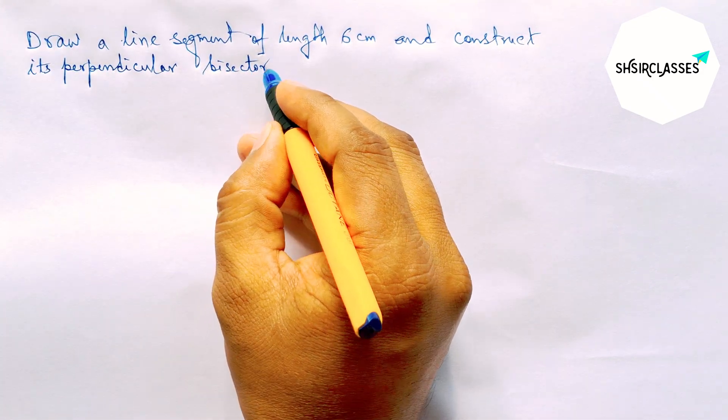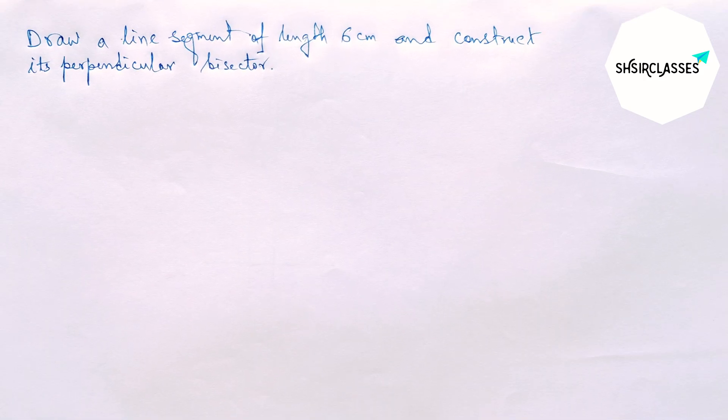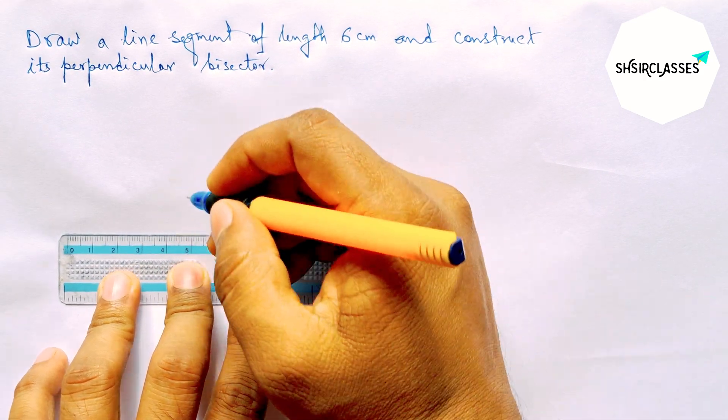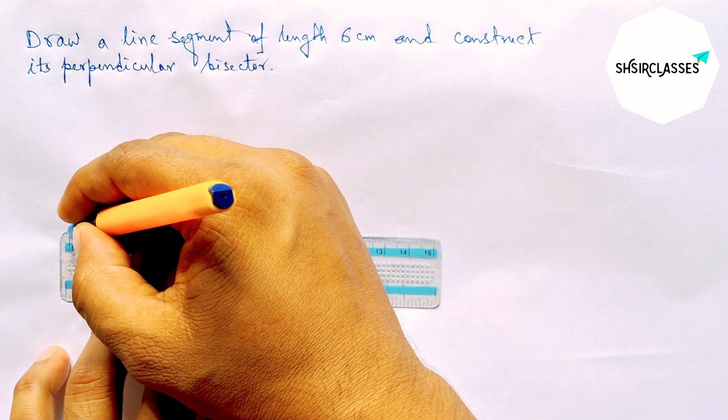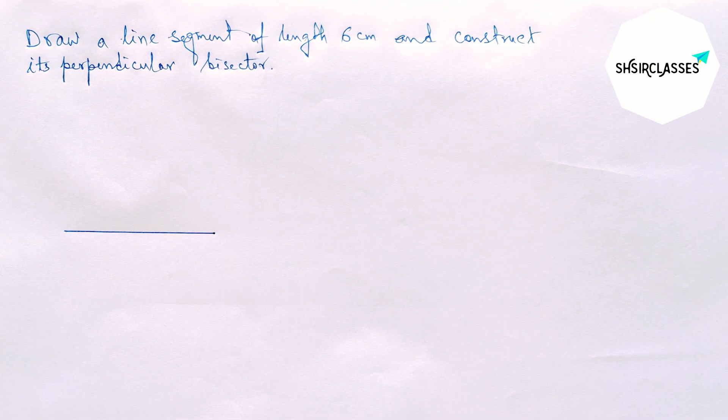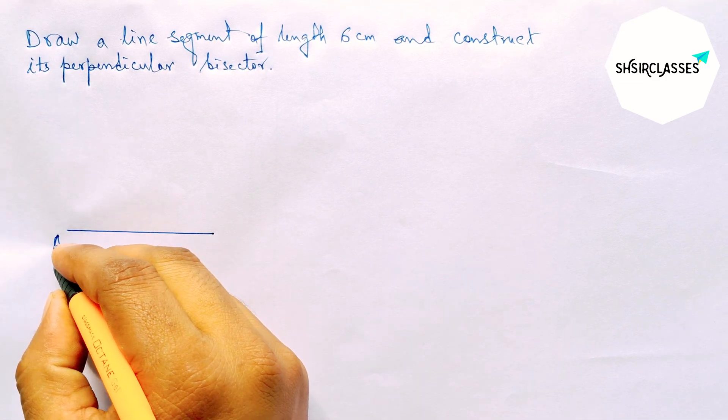So let's start the video. First of all, let us draw here a line segment of length 6 centimeters. So this is a 6 centimeter line segment, labeling here point A.